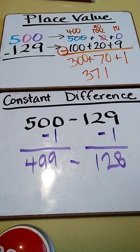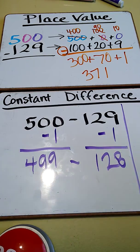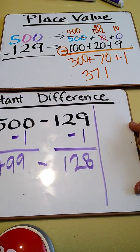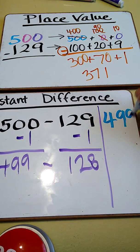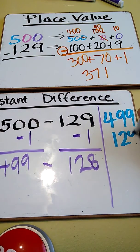So now here is my new subtraction problem. I'm going to go ahead and write it over here. So now I have 499 minus 128.